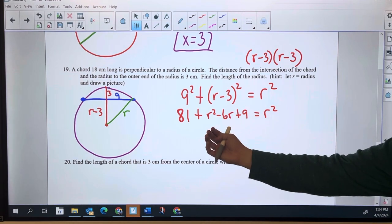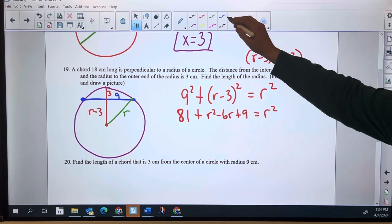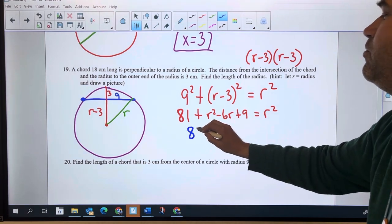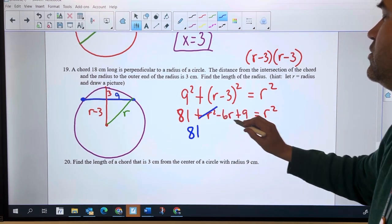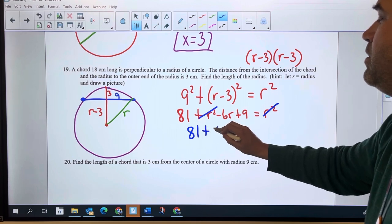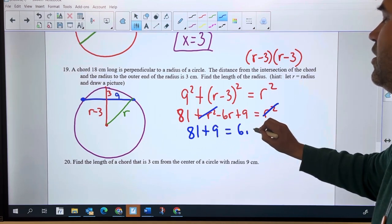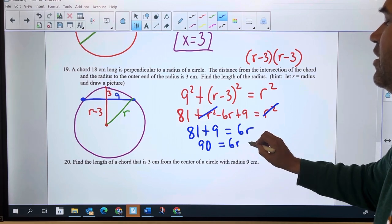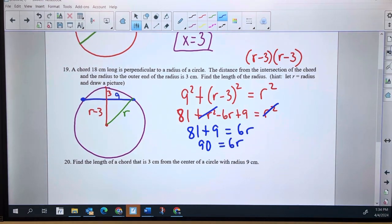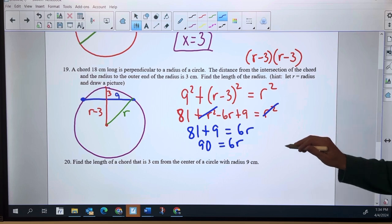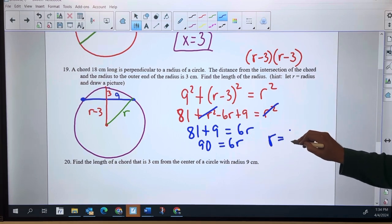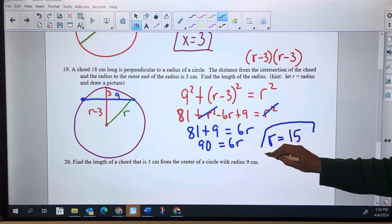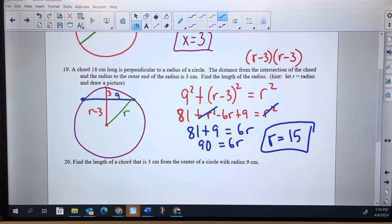I'm going to move this minus 6R over to this side by adding it to both sides. So the 81 stays there. The R squareds cancel out. Plus 9 equals 6R. So we've got 90 equals 6R. So all I got to do is divide by six. That's 15 if I'm doing my math right. So R equals 15. That's R, is the radius. That is it.